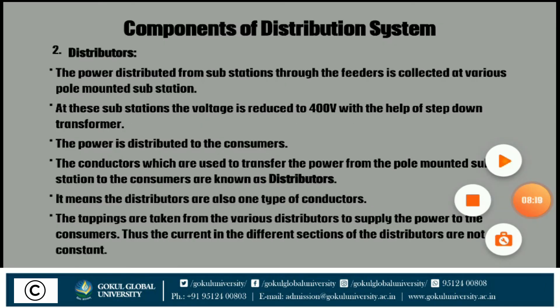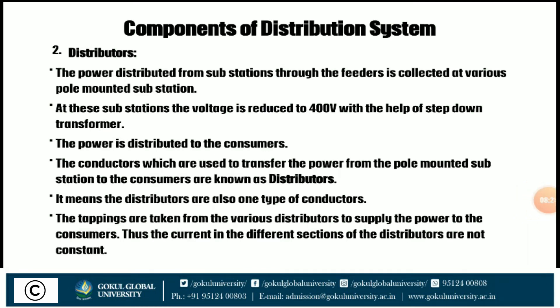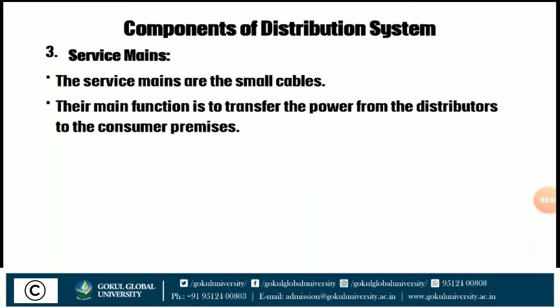Second is the distributor. The power from the substation through the feeder is collected at various pole-mounted substations. At this substation, the voltage is reduced to 400 V. The conductors used to transfer power from the pole-mounted substation to the consumer are known as distributors. Tappings are taken from distributors to supply power to consumers, so the current in different sections of the distributor is not constant. Third is the service mains — these are small cables whose main function is to transfer power from the distributor to the consumer premises.